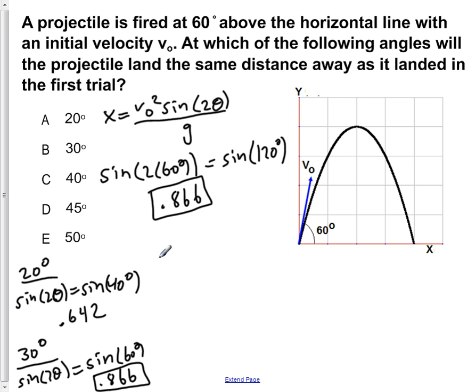Let's keep going and make sure there's no other answers. So we do 40 degrees, we get sine of 2 theta is equal to the sine of 80 degrees, because it's 2 times 40, 80. If we calculate that out we get 0.984.